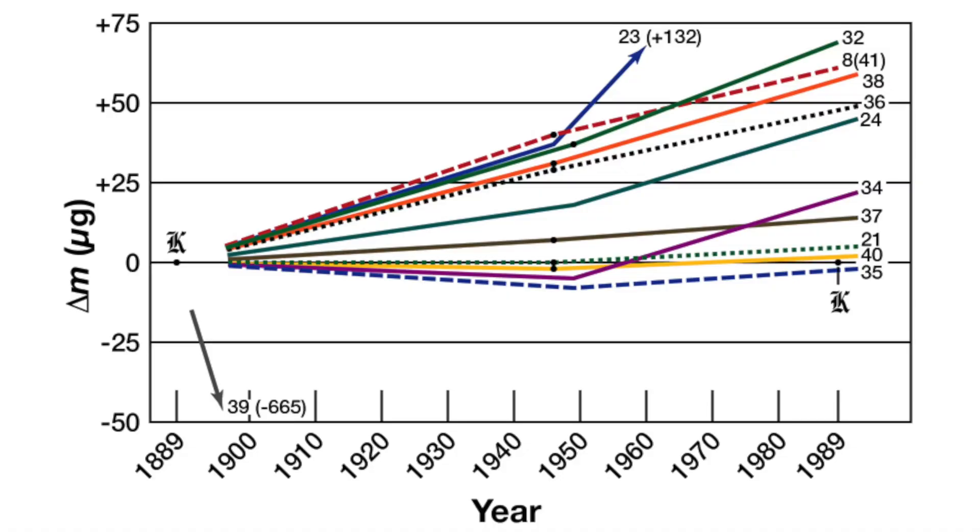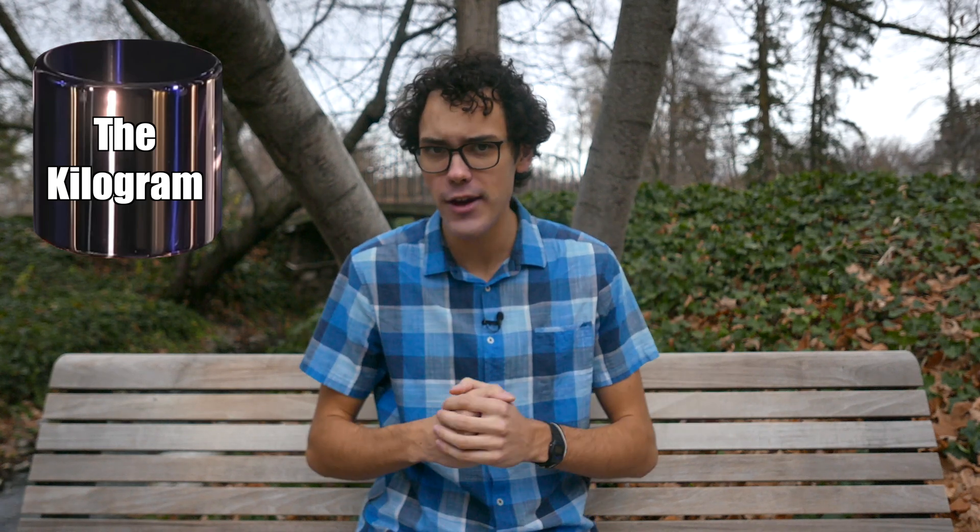However, there was a problem. Over the years, they noticed a slight divergence between the IPK and its original copies, up to about 50 micrograms. And worse still, these were all relative measurements to the IPK. Because the IPK was THE Kilogram, it was impossible to know by how much the IPK itself was changing.